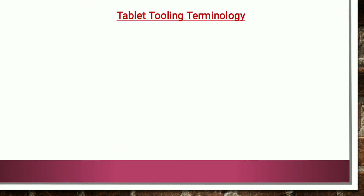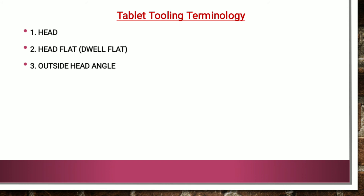Now for some important terminologies related to tablet tooling. The head is the end of the punch that guides it through the cam track of a tablet machine during rotation. The head flat or dual flat is the flat area of the head that receives the compression force from the roller in the upper punch and determines the weight and ejection height in the lower punch. The outside head angle is the area which gets in touch with the roller prior to head flat during compression. The inside head angle is the area which pulls down the lower punch after ejection and lifts the upper punch after compression.